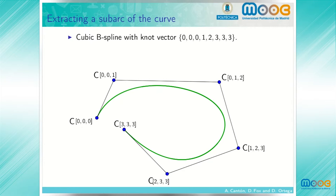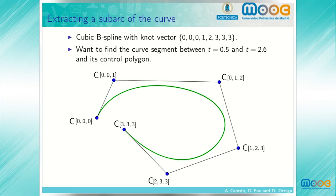Consider a cubic B-spline curve with knot vector 0, 0, 0, 1, 2, 3, 3, 3. This B-spline curve is defined for t between 0 and 3, and we want to extract a curve segment between t equals 0.5 and t equals 2.6. To do so, we apply the DeVore algorithm for both values of t, for t equals 0.5 and t equals 2.6.